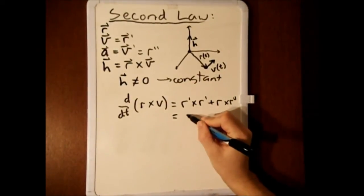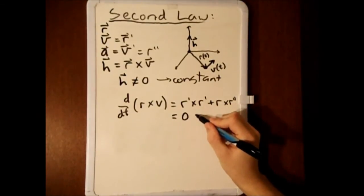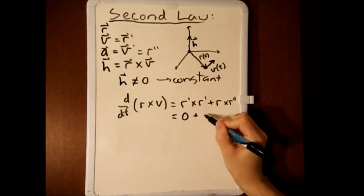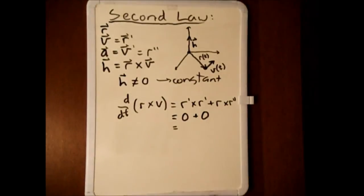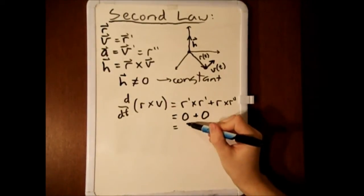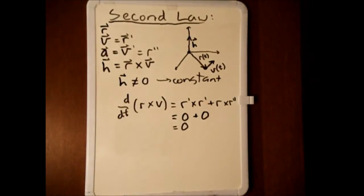Both of these cross products are zero because any vector crossed with itself is zero and any vector crossed with a vector parallel to itself is zero. This means that h is some constant vector.